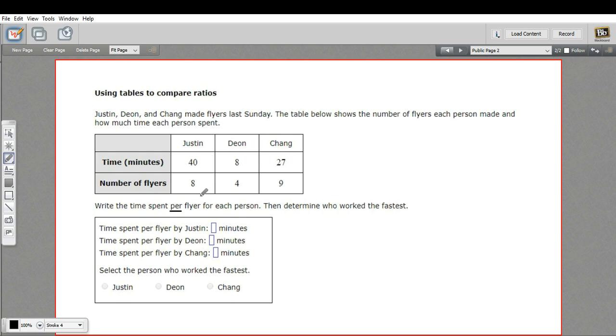So if we wanted to find the time per flyer for Justin, we'd say 40 divided by eight. That's our ratio. And when we do the division there, we find out that Justin spent five minutes per flyer.